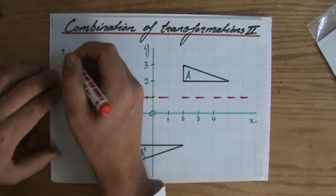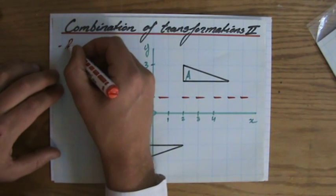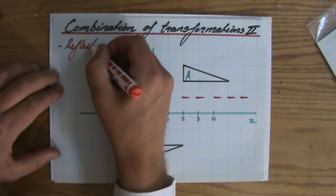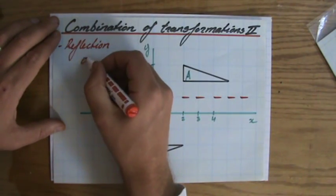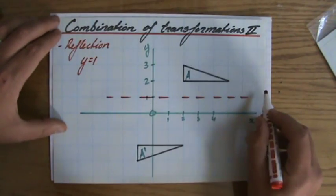But if that would be a reflection, so I'm going to say, first of all, a reflection. And then you also got to give the line of reflection, and that equation of the line is y equals 1.